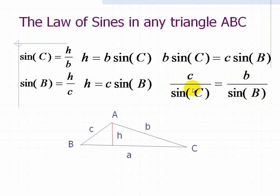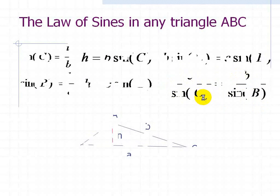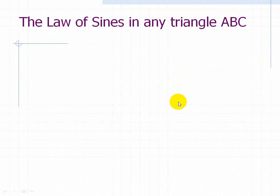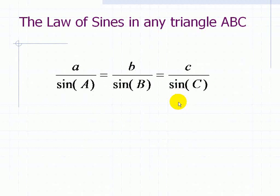This is known as the Law of Sines, as we'll see on the next slide, where we have the Law of Sines for all three sides. Namely, that little a over the sine of A is equal to little b over the sine of B equals little c over the sine of C. This is the Law of Sines for any triangle ABC.